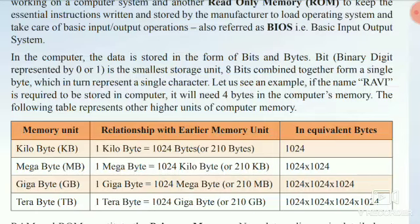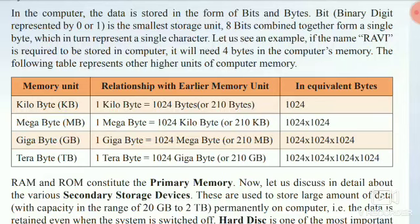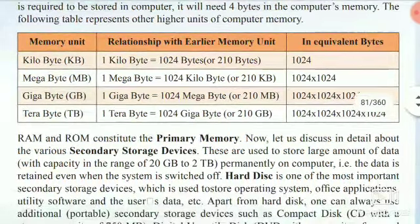The higher units of computer memory include kilobyte, megabyte, gigabyte, and terabyte. We are all familiar with these units from our smartphones, which have internal and external memory cards measured in GB. At present, memory cards are no longer available in megabytes. Hard disks can be in TB — terabyte — where 1 TB equals 1024 GB.